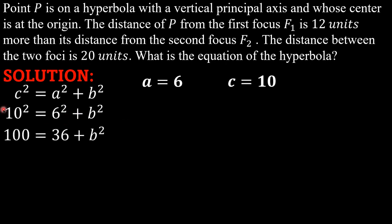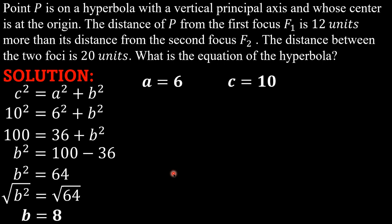10², that is 100, and 6², that is 36, plus b². Kailangan natin hanapin ang value ng b². So b² is equal to 100 minus 36. B² is equal to 64. 100 minus 36, that is 64. To get the value of b, we need to get the square root of both sides. Square root of b² is equal to square root of 64, and that is 8. b is equal to 8.